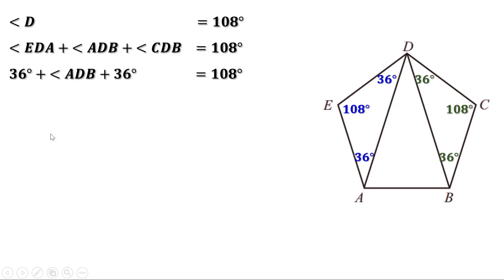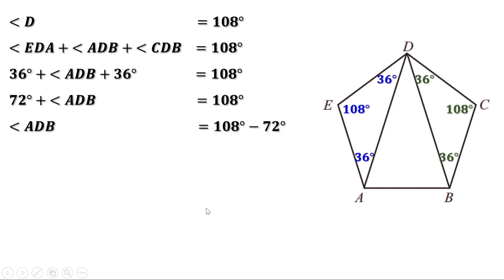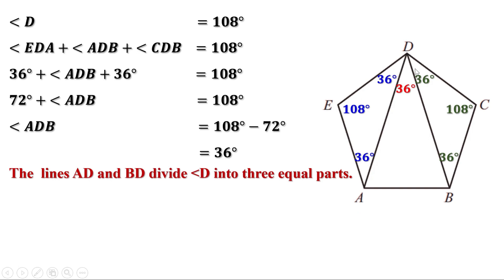That is, angle EDA plus angle ADB plus angle CDB equals 108 degrees. We have already found that angle EDA and angle CDB are each 36 degrees. Substituting: 36 plus angle ADB plus 36 equals 108, so 72 plus angle ADB equals 108. Therefore, angle ADB equals 108 minus 72, or 36 degrees. That means all three angles at vertex D are equal to 36 degrees. The lines AD and BD divide angle D into three equal parts.